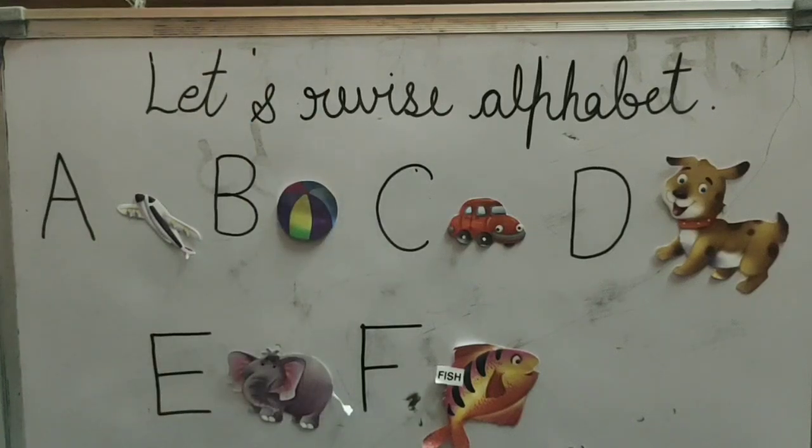Let's read. A for aeroplane, B for ball, C for car, D for dog, E for elephant, F for fish.